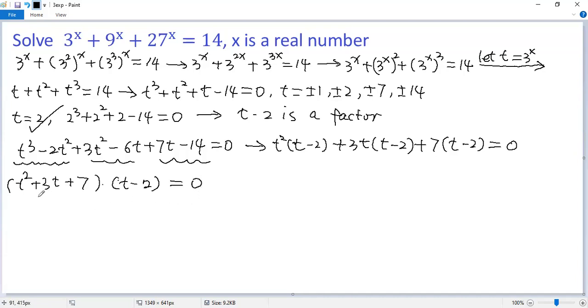So we have two possibilities. The first one, t squared plus 3t plus 7 equals 0, or t minus 2 equals 0.